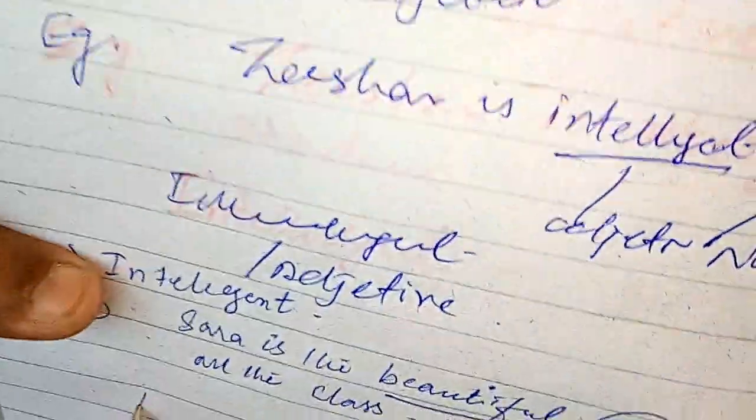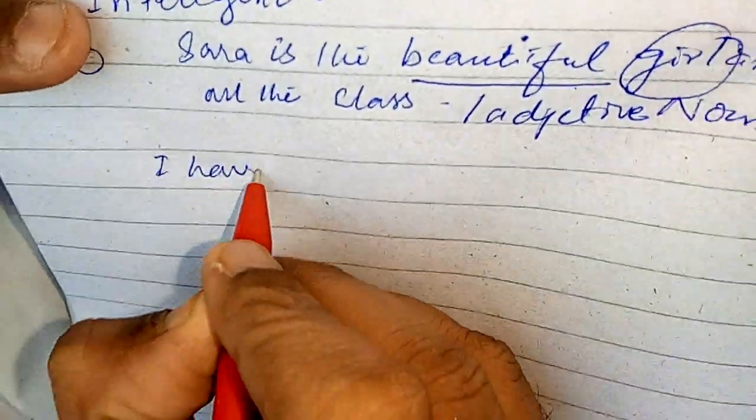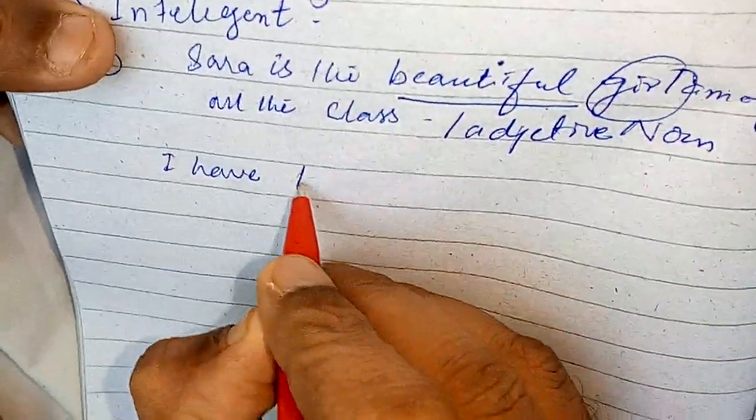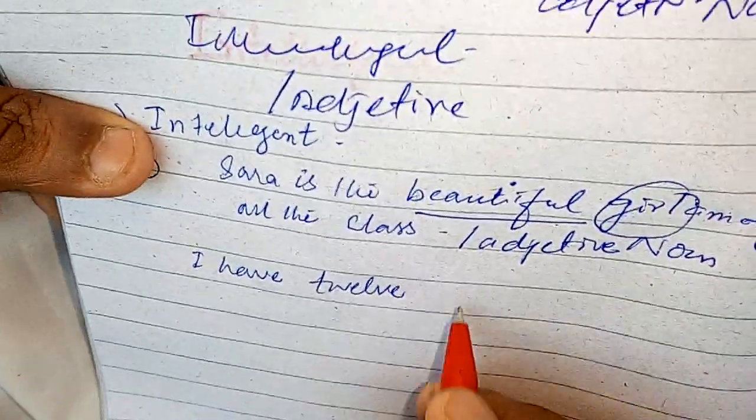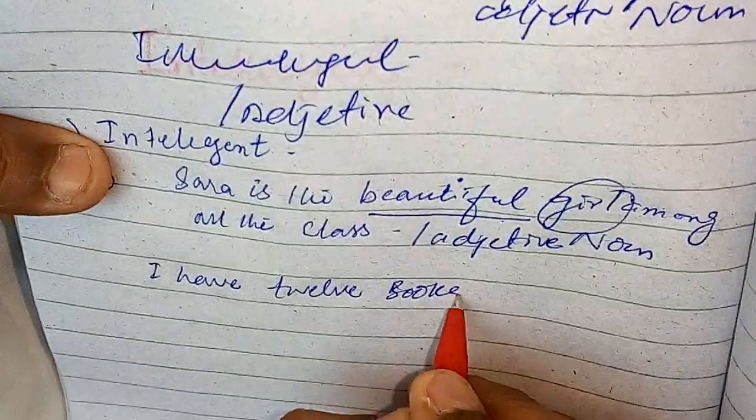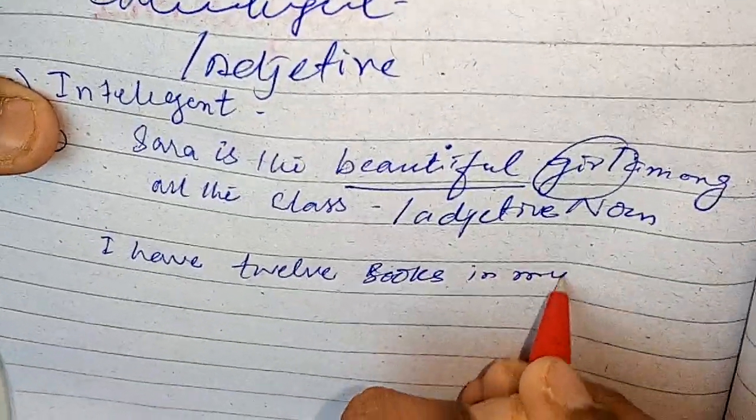There are, I think, 5 kinds of adjective, which we will learn in detail in our next video. Now let's discuss some kinds. Suppose the adjective of quantity — this is a very important kind. Suppose I say: 'I have 12 books in my bag.'